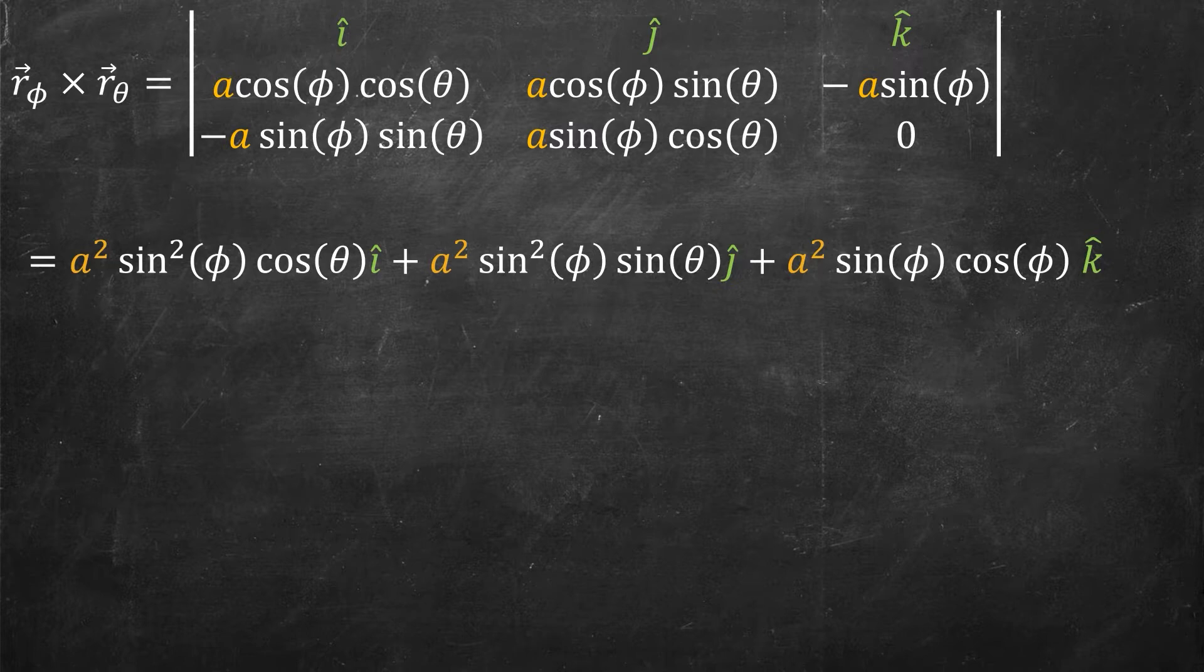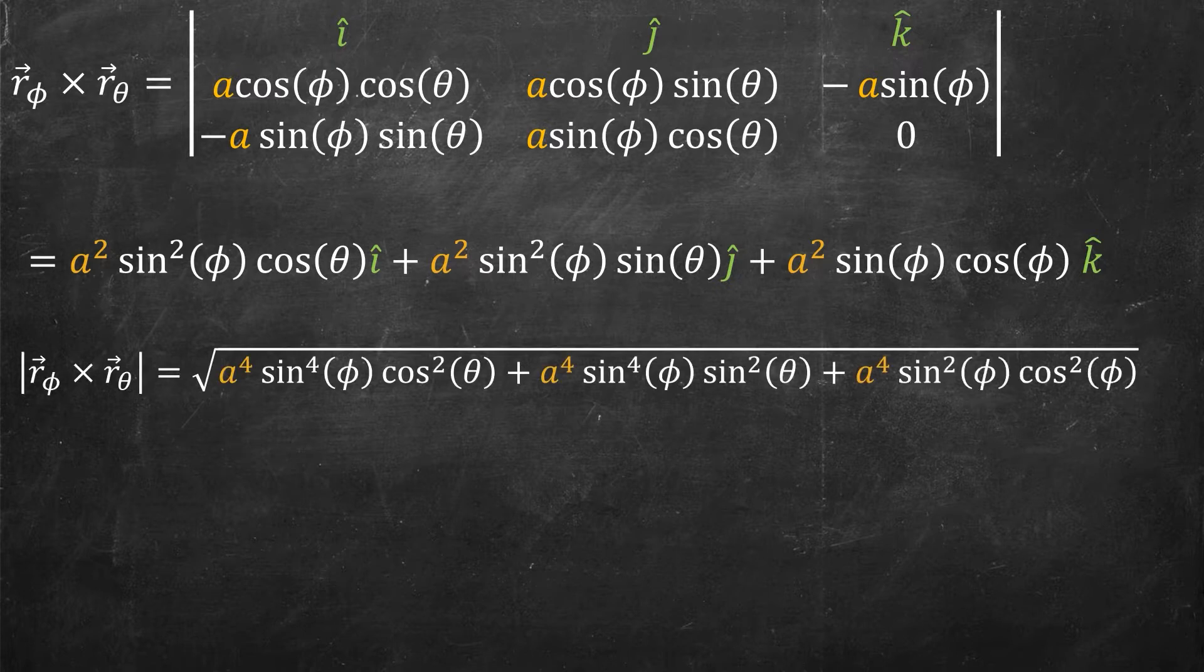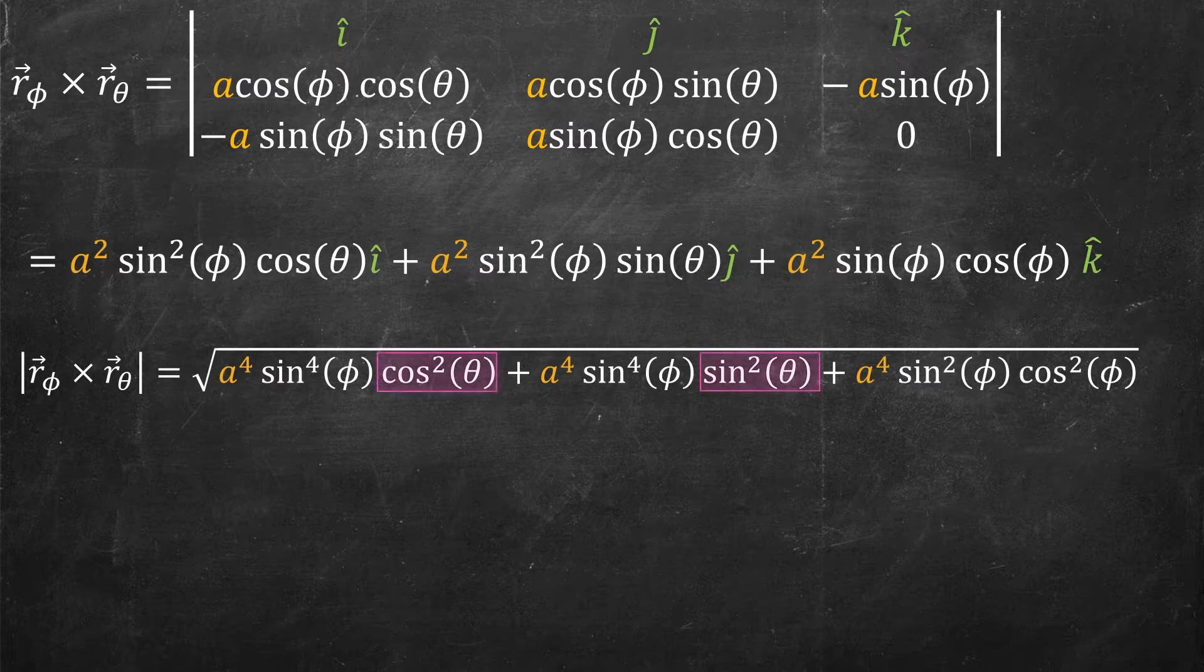Not done yet, I need to take the length of this particular vector, the length of r_φ × r_θ, which is going to be the square root of the sum of the components squared, and again it's just some messy expression. But a messy expression that can be simplified pretty quickly actually, for example, you notice how there's this cos² and this sin², but they have the same coefficient.